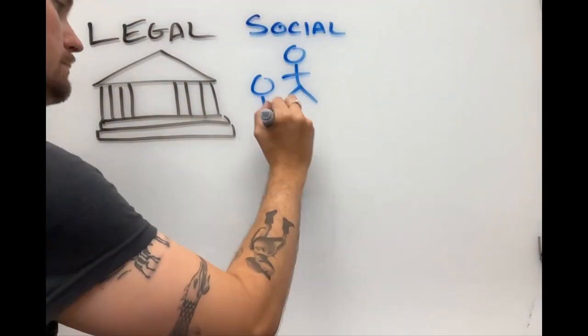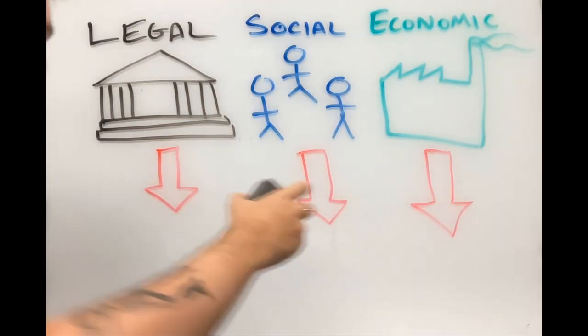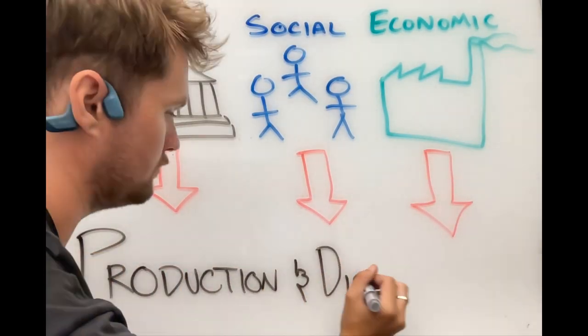Legal, social, and economic interests influence information production and dissemination.